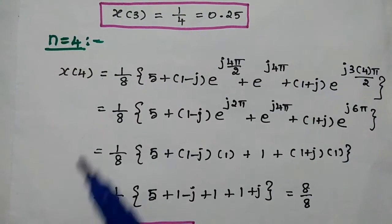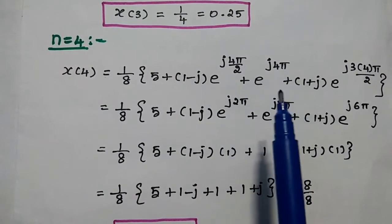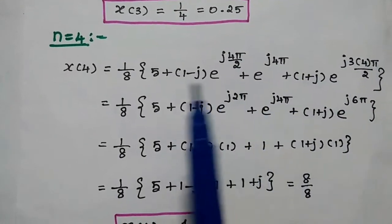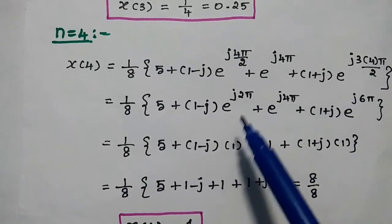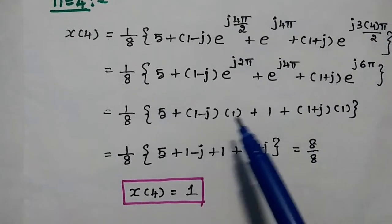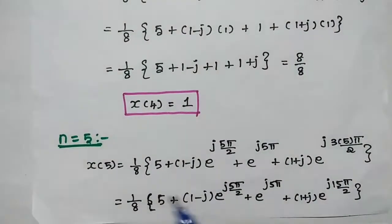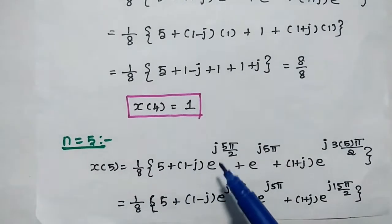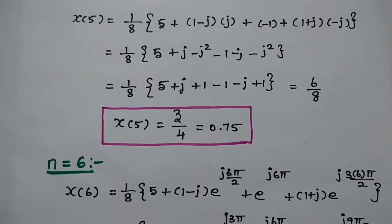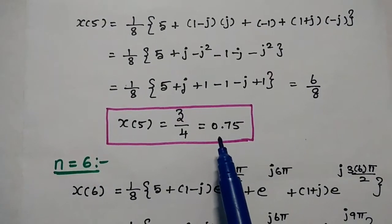For n=4: x(4) = (1/8)[5 + (1−j)·e^(j2π) + e^(j4π) + (1+j)·e^(j6π)]. Since 2π, 4π, and 6π are all even multiples of π, each equals +1. Multiplying inside gives x(4) = 1. For n=5: substituting e^(j5π/2)=+j, e^(j5π)=−1, e^(j15π/2)=−j, we get x(5) = 3/4 = 0.75.